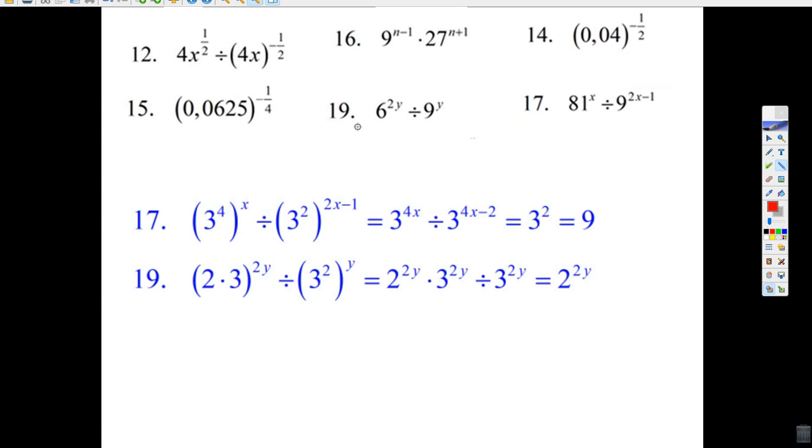And the last question here, 19. 6 is really 2 times 3, and 9 is really 3 squared. It's good to put things into prime factors. And this 2y is sitting on both of these things here. It's 2 to the 2y, 3 to the 2y, divided by 3 to the 2y. 3 to the 2y divided by, that's anything divided by itself is 1. So you're just left with 2 to the 2y.